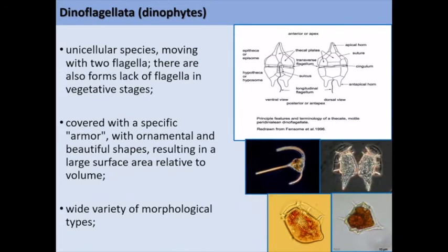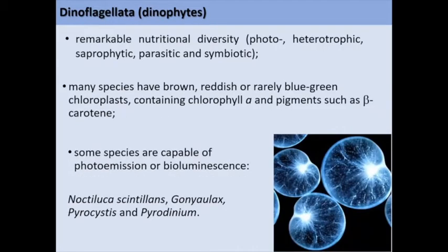The dinoflagellates are unicellular species moving with two flagella. There are also forms that lack flagella in vegetative stages. They are covered with a specific armour of natural and beautiful shapes, resulting in a large surface area relative to volume. They have a variety of morphological types and a remarkable nutritional diversity, being phototrophic, heterotrophic, saprophytic, parasitic and symbiotic. Many species have brown, reddish or red, blue-green chloroplasts containing chlorophyll A and pigments such as beta-carotene.